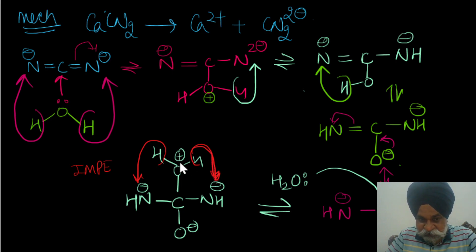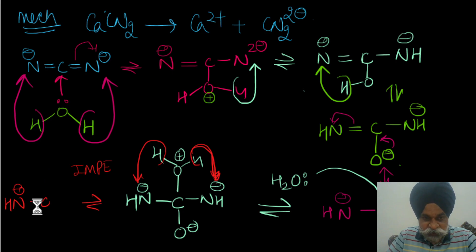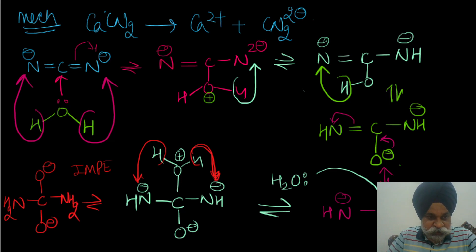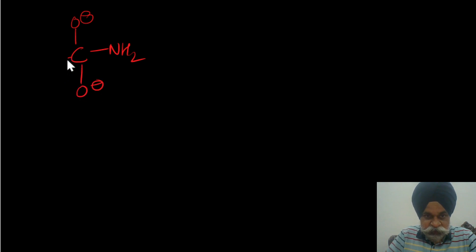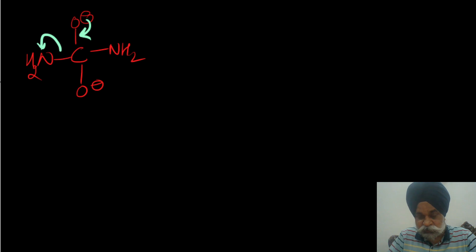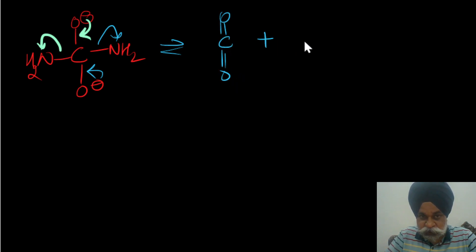After the intramolecular proton exchange, one oxygen becomes neutral, the other gets a negative charge, and we get –NH⁻ and –NH₂. Writing this out gives us: O⁻–NH₂–C(=O)–NH₂. Now, throwing out NH₂⁻ is difficult because it is a bad leaving group, requiring significant refluxing. But when it leaves, we get carbon dioxide along with two moles of NH₂⁻.